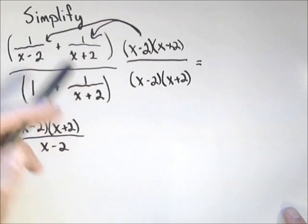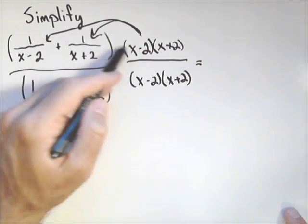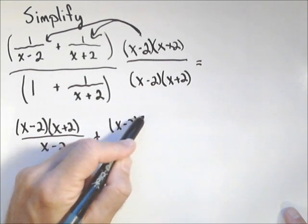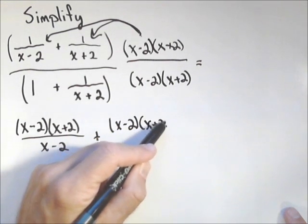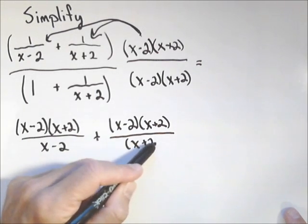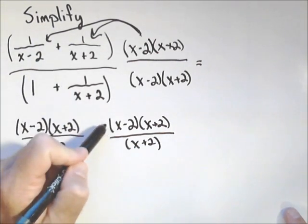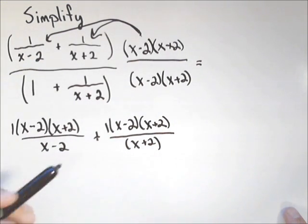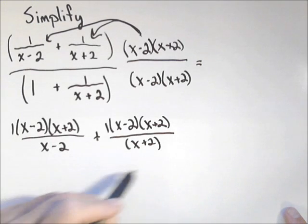Now we're gonna distribute it to this second term. It's getting multiplied by one, so that gives me an x minus two times x plus two, all over x plus two. Since all that we have in the numerator is one, we could write the one in there and the one in there from here, but we don't need to. If there was something else, we'd definitely want to have it in there.